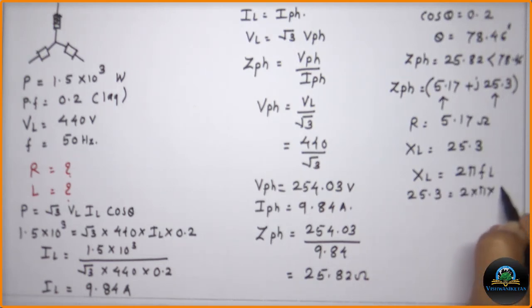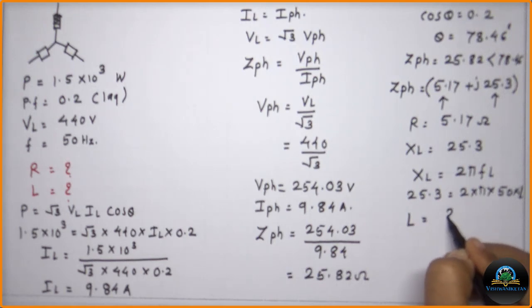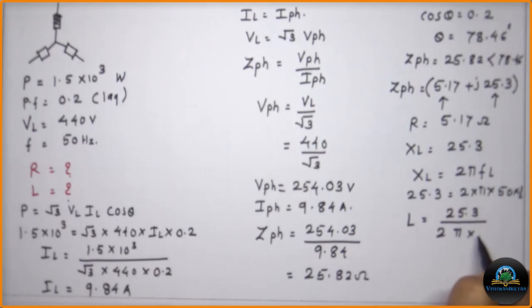So XL is equal to 25.3 equals 2 into pi into frequency which is given as 50 hertz, and L is unknown to us. So the value of L is equal to 25.3 upon 2 into pi into 50.